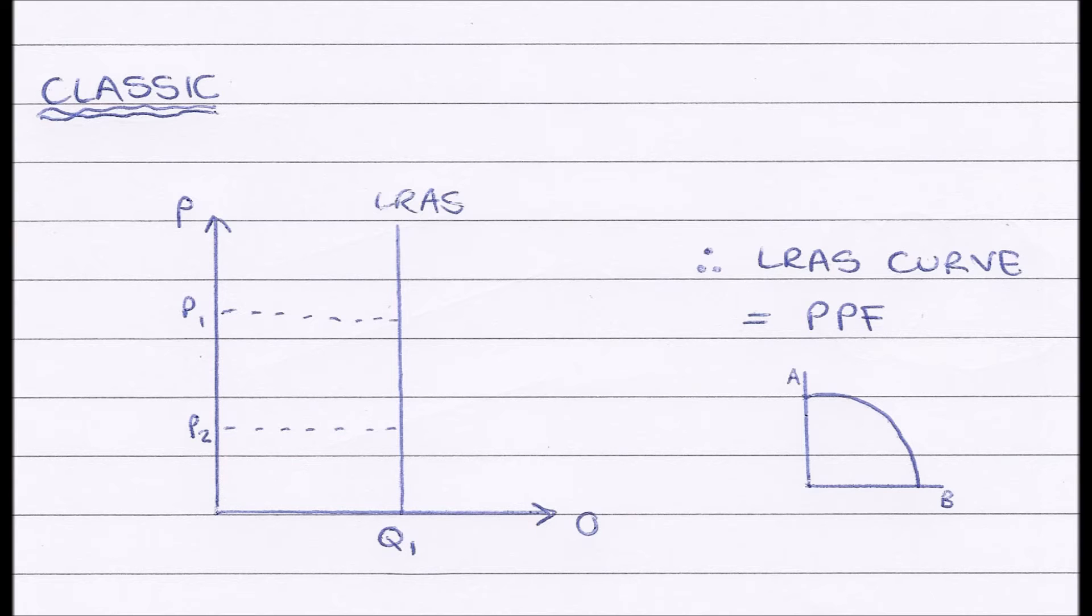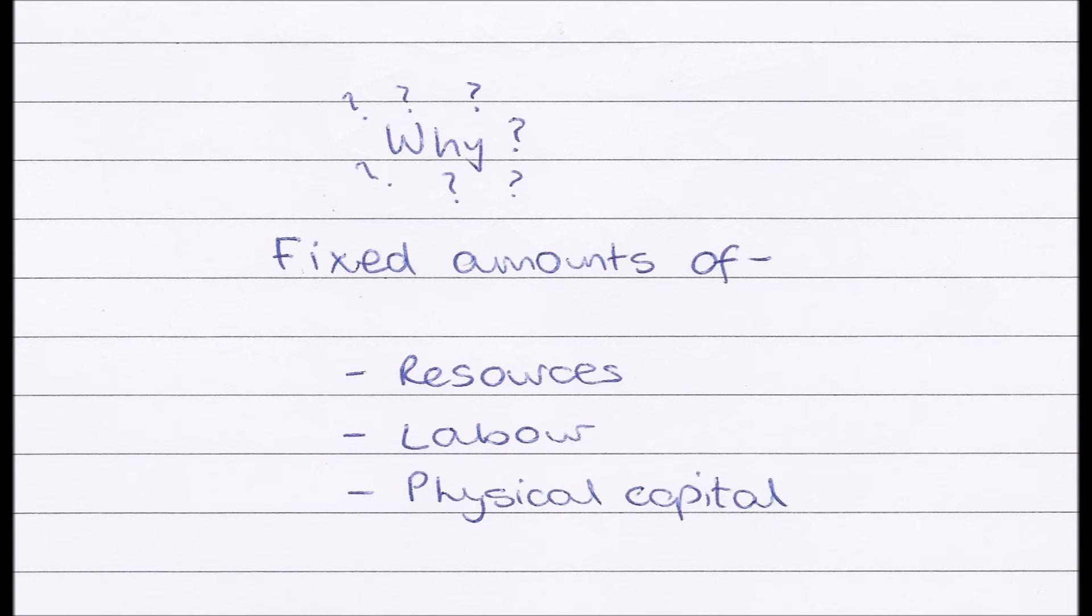But why is this? Why are we working at full efficiency, and why can't we produce any more than this set output level? Well, that's due to three things: there are fixed amounts—finite amounts—of resources in order to produce goods, labor,